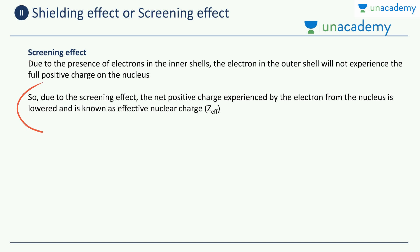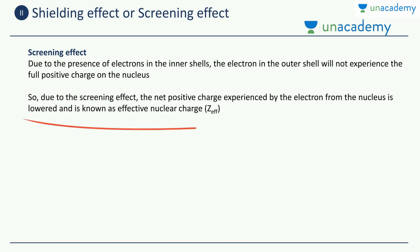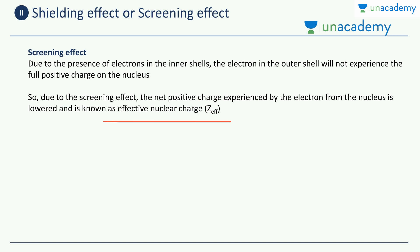Due to the screening effect, the net positive charge experienced by the electron from the nucleus is lowered, and this is known as the effective nuclear charge. The last electron won't be able to feel the full force of the positive nucleus, so the effective nuclear charge is less than Z, and is known as Z-effective.